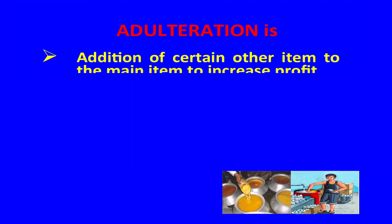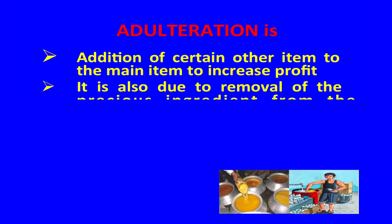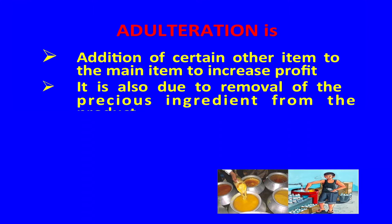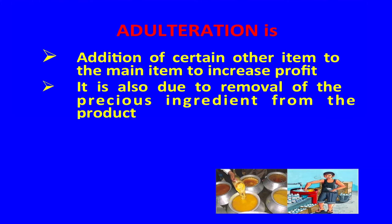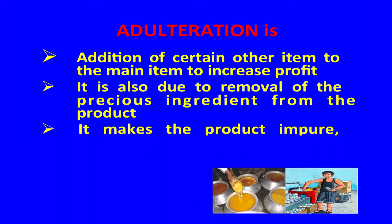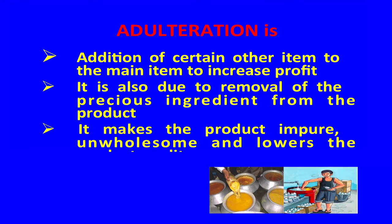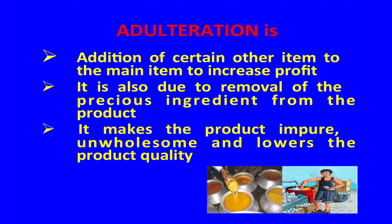Now we come to adulteration. Have you observed water in milk, or artificial yellow color in pulses and spices? This is adulteration. Adulteration is the addition of certain other items to the main item to increase the profit of the seller. It also includes removal or inclusion of certain unwanted products into the final product.